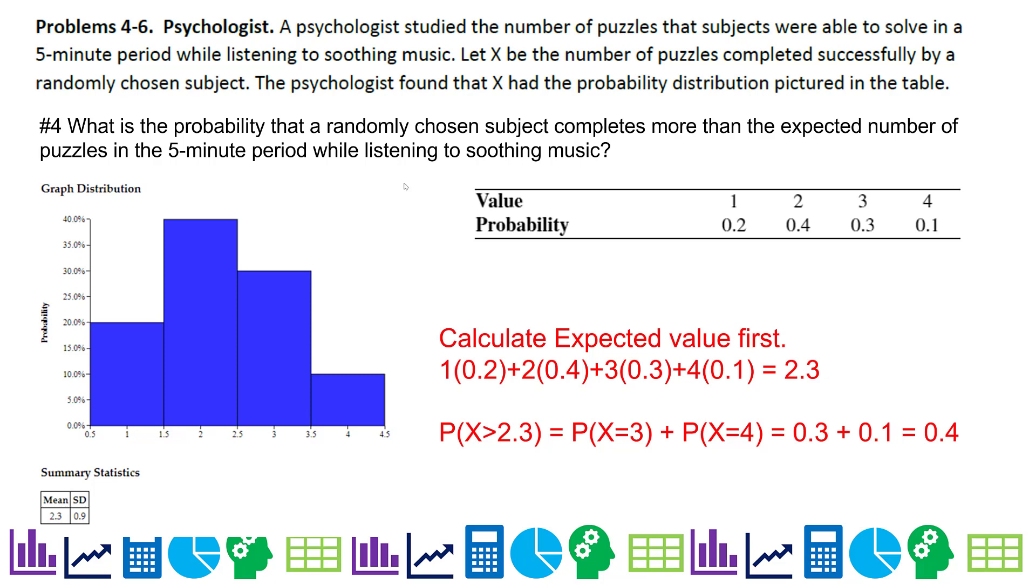The first thing you have to do is go ahead and calculate the expected value. We just did that by multiplying each value times its probability, adding them up, and we get 2.3. 2.3 falls in here. So we just add the 0.3 and the 0.1, and that gives us 0.4. So that's it for number four.